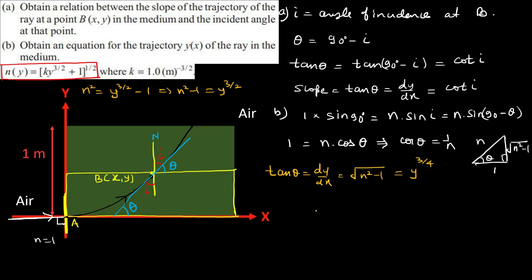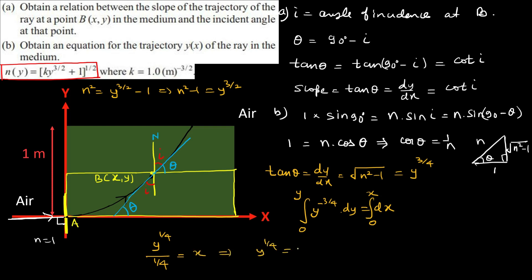This is a differential equation. Rearranging: y^(−3/4) dy = dx. Integrating with limits from point A (x=0, y=0) to point B (x=x, y=y), the left side gives y^(1/4) / (1/4) = 4y^(1/4), and the right side gives x. So 4y^(1/4) = x, meaning y^(1/4) = x/4. Taking the 4th power on both sides: y = (x/4)^4. This is the equation of the trajectory of the ray inside the medium.